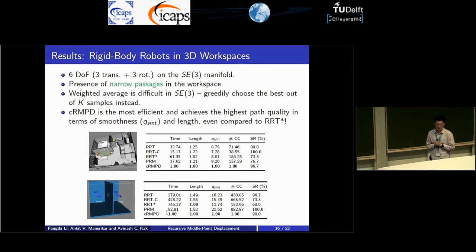Moving on to the rigid body motion planning problems. It has six degrees of freedom, three translational, three rotational. All the possible configurations form the special Euclidean 3 manifold. We have chosen the environment such that narrow passages are present. One thing to notice is that sometimes, in some spaces, doing weighted average seen in the cost-aware sampler may not be a simple task. The solution to that is we simply choose a greedy version of the algorithm where we choose the best of the k samples instead of averaging them. The result is surprisingly good. We outperform all the competitors in nearly all the categories.